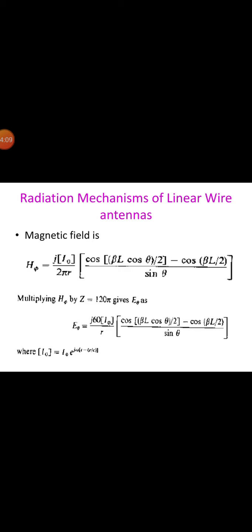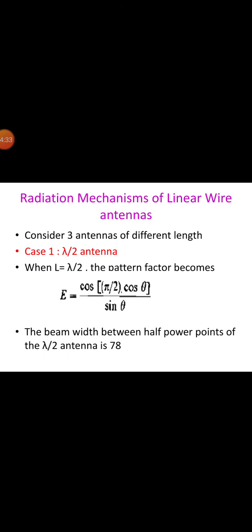Multiplying H_phi by η = 120π gives E_theta. So E_theta = j * 60 * I0 / r * [cos(β*L/2 * cosθ) - cos(β*L/2)] / sinθ, where I0 = I0 * e^(jω(t - r/c)).